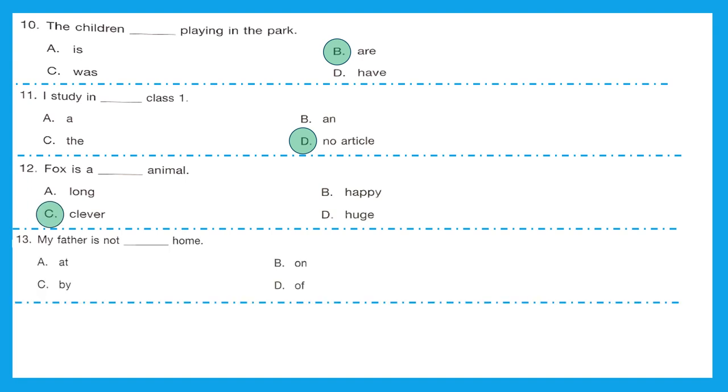Question 13, my father is not dash home. Let's find the suitable preposition. The suitable preposition should be at, because it is used to show exact time and place. My father is not at home. Option A is the right answer.